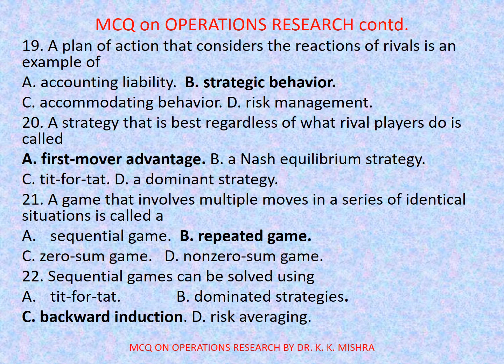Question number 19: A plan of action that considers the reactions of rivals is an example of — options are: a) accounting liability, b) strategic behavior, c) accommodating behavior, d) risk management. Correct option is b) strategic behavior.